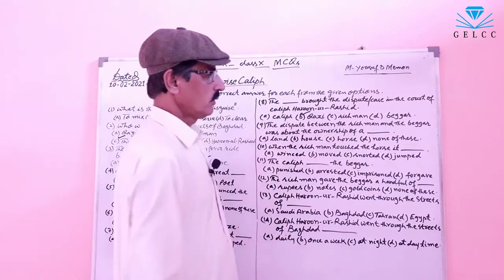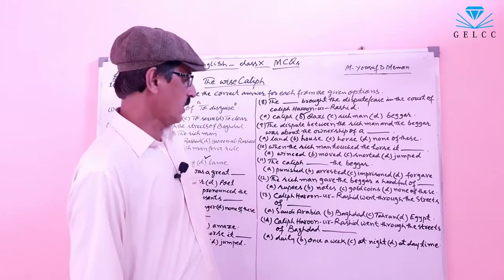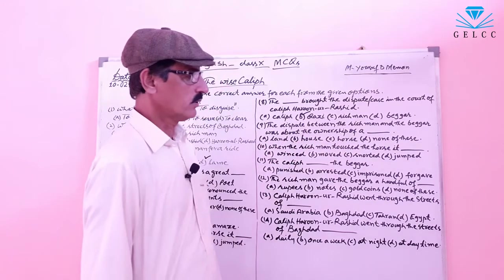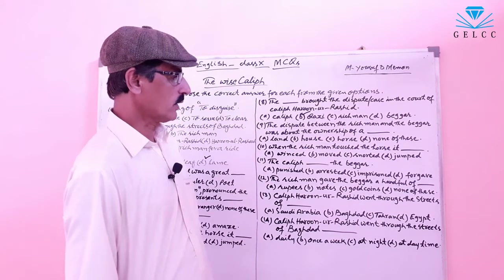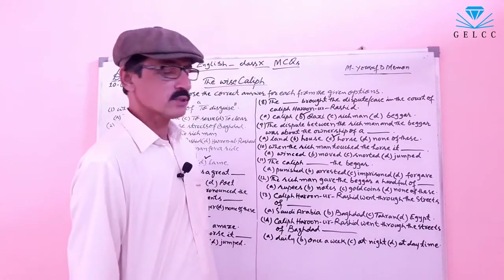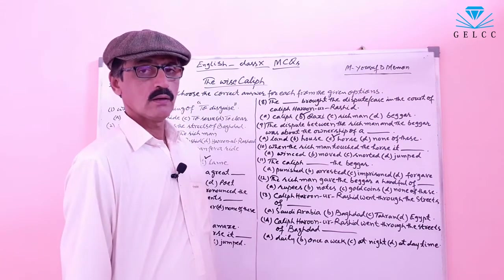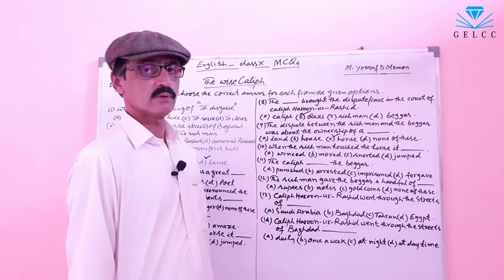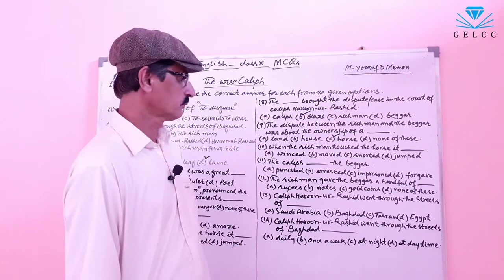Number 9: The dispute between the rich man and the beggar was about the ownership of a what? Options: A: Land. B: House. C: Horse. D: None of these. The correct answer is option C — Horse. The dispute between the rich man and the beggar was about the ownership of a beautiful white horse.